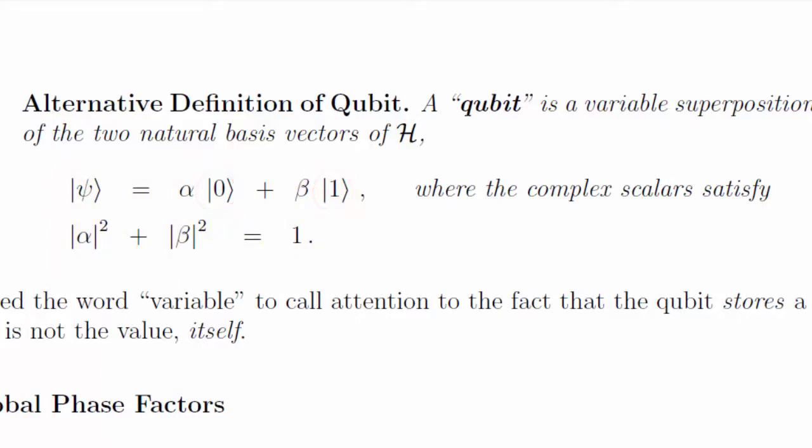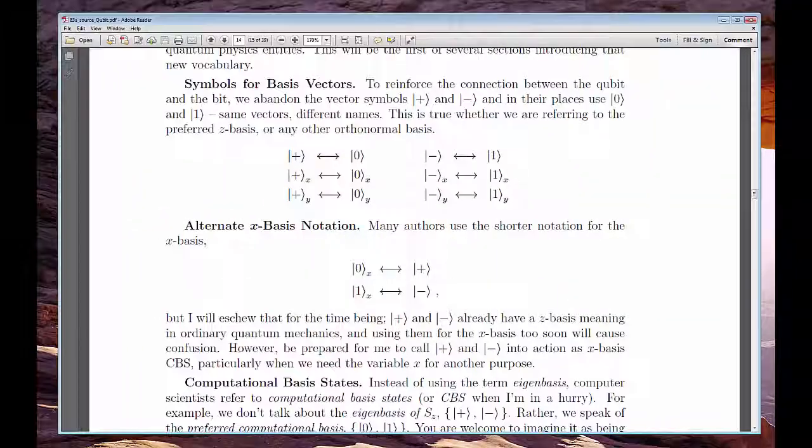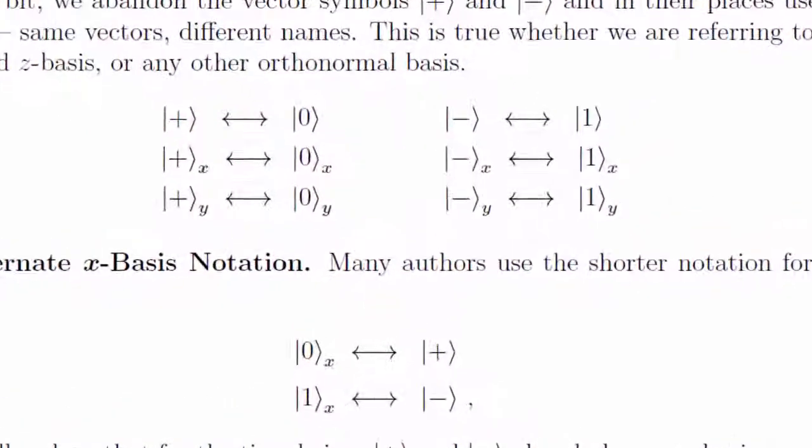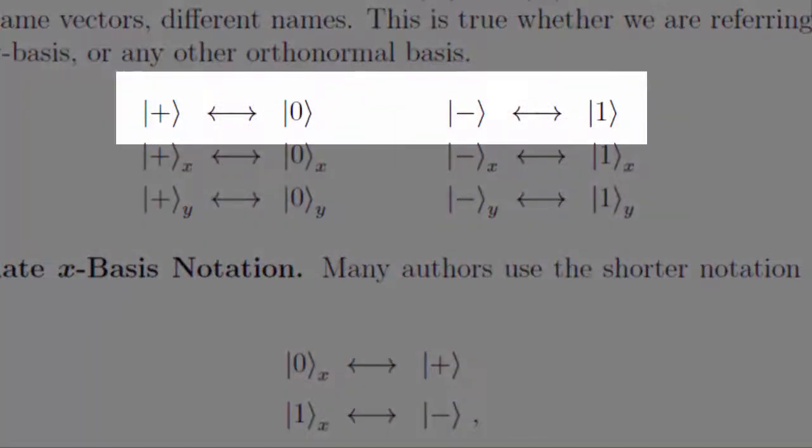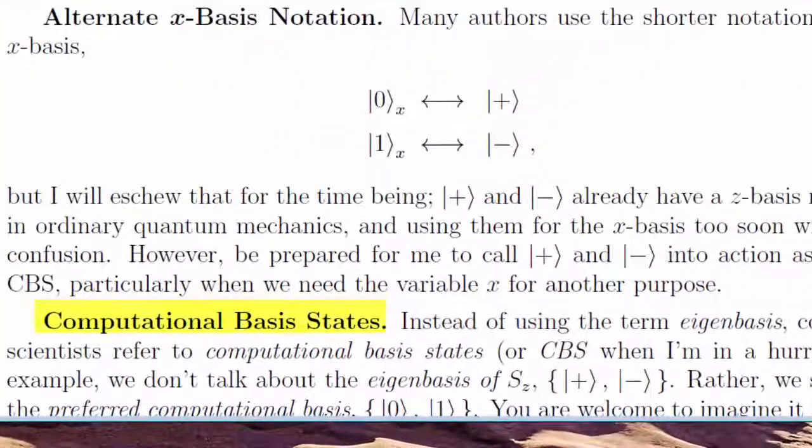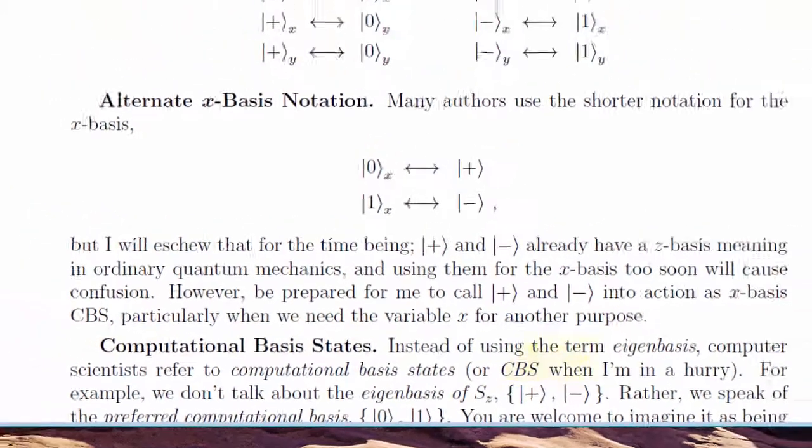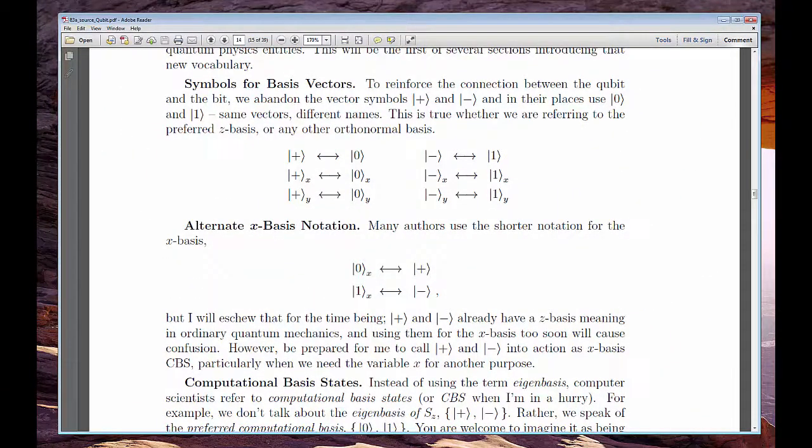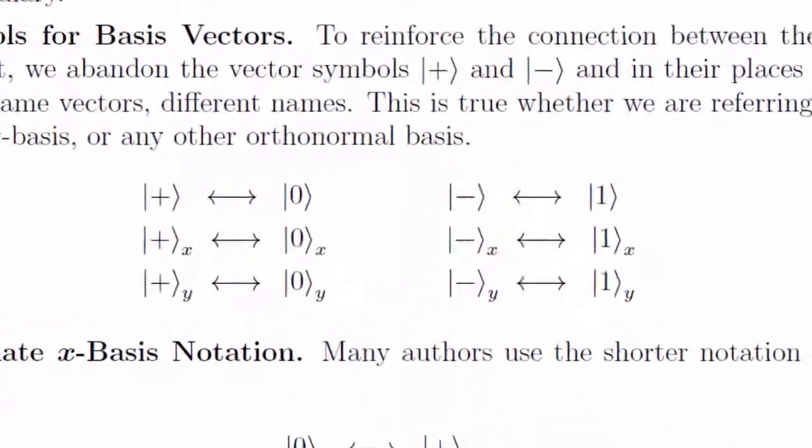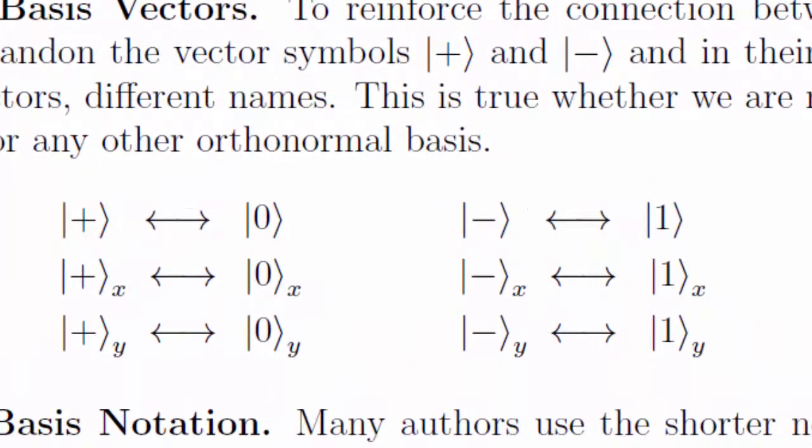We thought that ket plus and ket minus were the preferred basis. Quantum computer scientists use ket zero and ket one to stand for the natural Z basis of H. New names, same vectors. And we call such bases computational basis states, or CBS. The notational change helps us situate the two classical bits which are still there, now swimming in an ocean of quantum states. In other words, the classical bits 0 and 1 correspond to the two computational basis states.